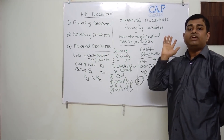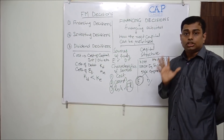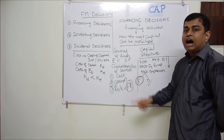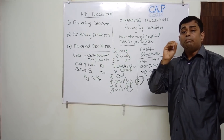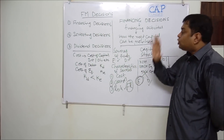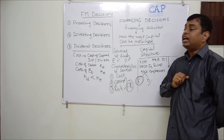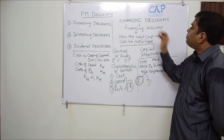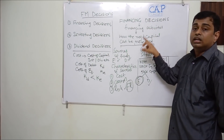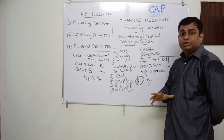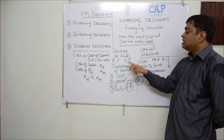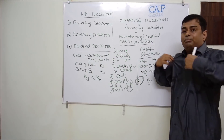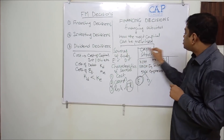So before finalizing a source of funds, you need to understand three characteristics: cost, control, and risk. To summarize: there are three decisions in financial management — financing decisions, investment decisions, and dividend decisions. Financing decisions deal with how the required capital can be pulled into the business. In sources of funds we need to understand three characteristics — cost, control, and risk — and the second important point is capital structure.